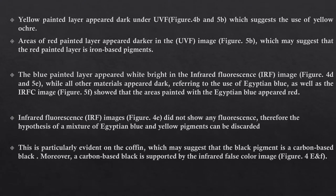Technical photography shows the yellow painted layer appeared dark under UV fluorescence, suggesting the use of yellow ochre. The red painted layer appeared darker in UV fluorescence images, suggesting the red painted layer contains iron-based pigments. The blue painted layer appeared white and bright in infrared fluorescence images while all other materials appeared dark, referring to the use of Egyptian blue. Infrared false color images showed that the area painted with Egyptian blue appeared red. Infrared fluorescence images did not show any fluorescence, so the presence of Egyptian blue and yellow pigment mixed phases can be discarded.